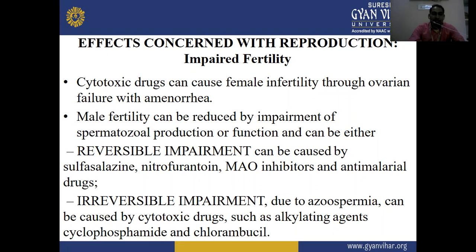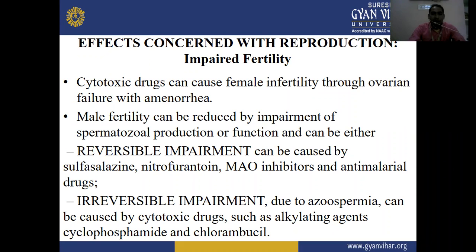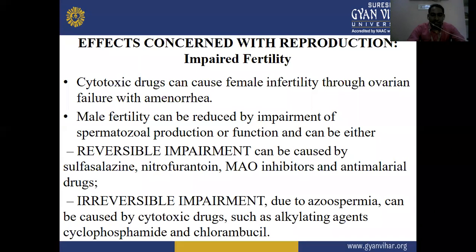MAO inhibitors means monoamine oxidase inhibitors, and anti-malarial drugs. These drugs cause reversible impairment of male fertility through impairment of spermatozoa production. Spermatozoa are produced by spermatogonia in the seminiferous tubules in the male gonads. A second process of spermiogenesis leads to changes in cellular organization before release into the central lumen of the seminiferous tubules.